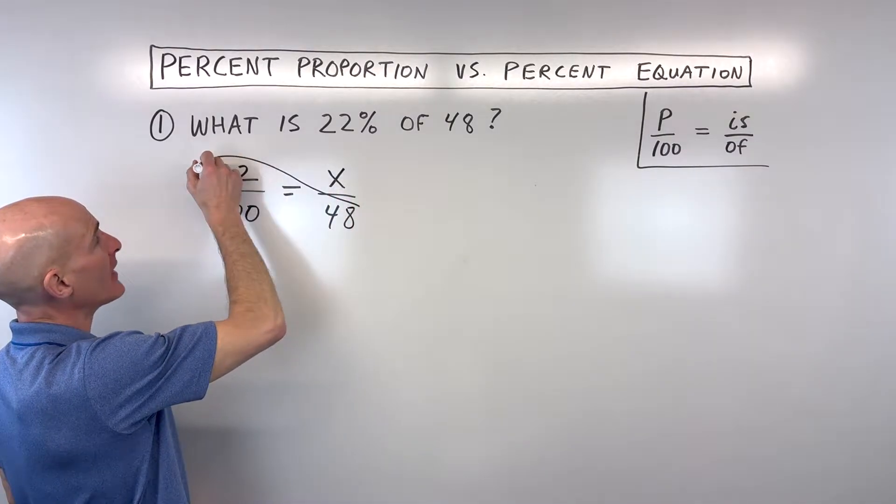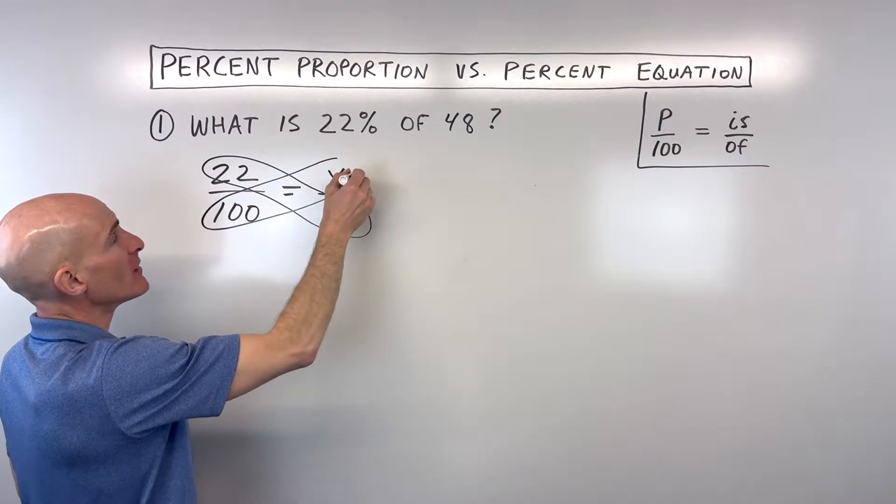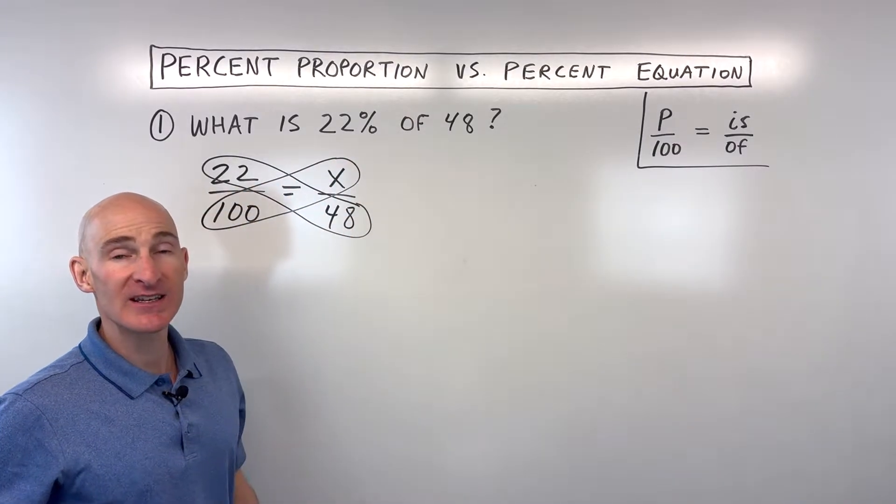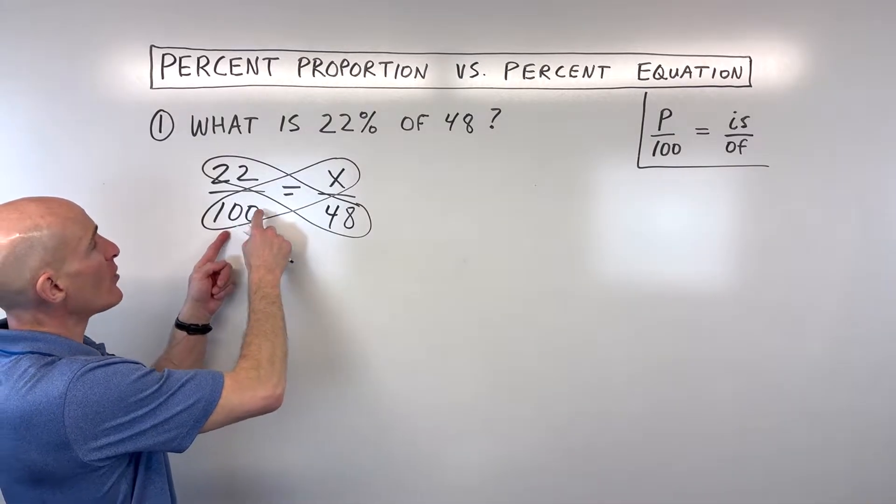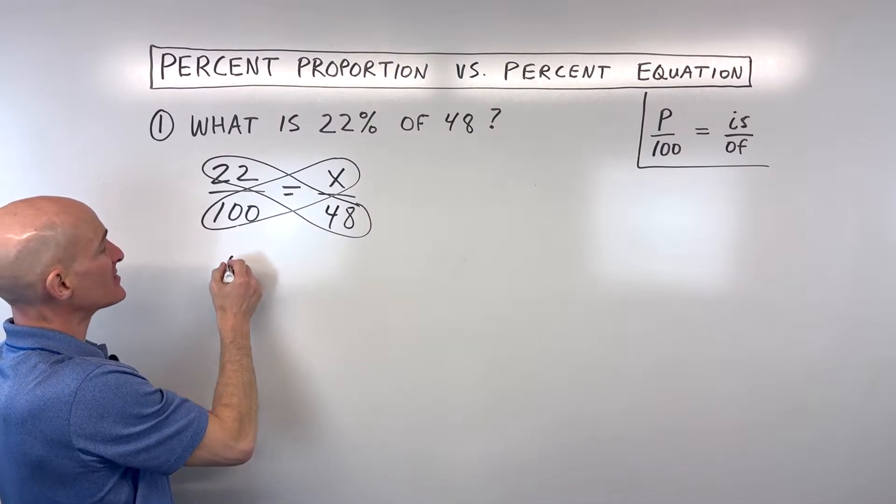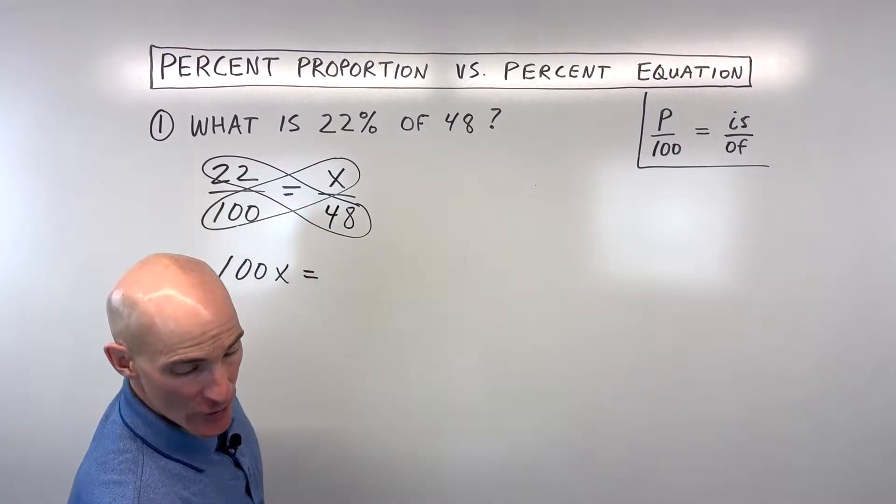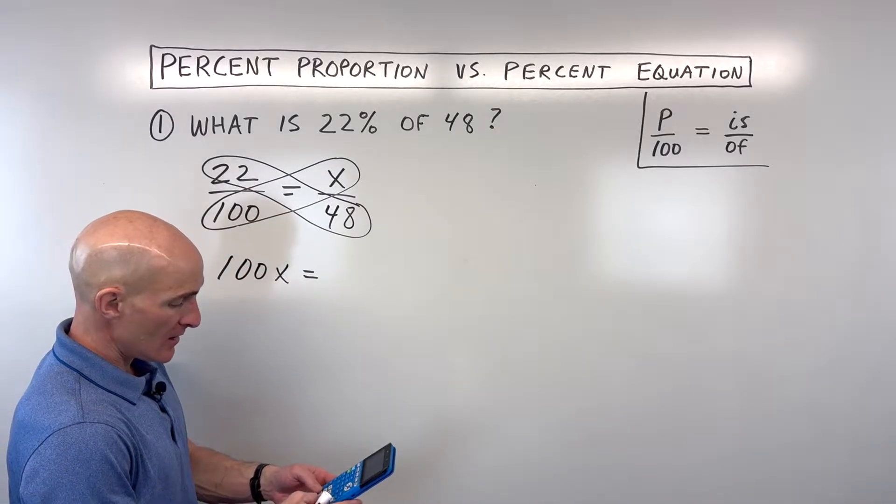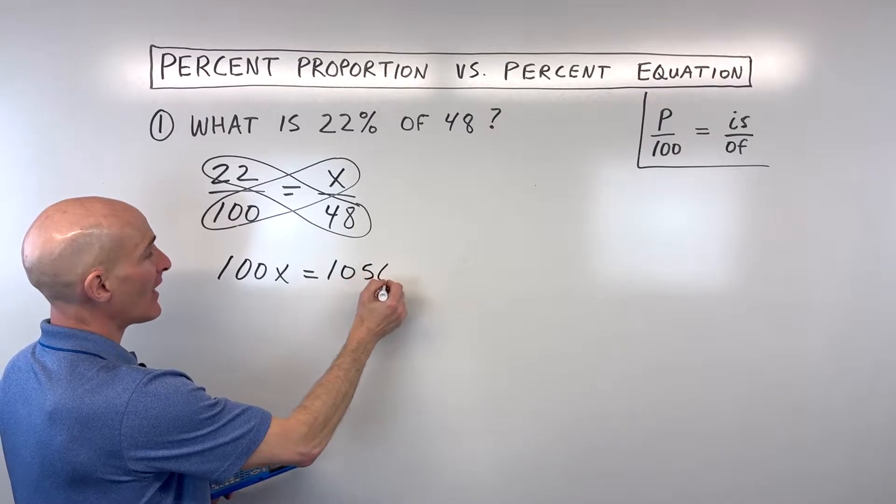Some teachers call this the butterfly technique, some call it cross multiplying, some call it the means extremes property. But what we do is multiply in the diagonal. So 100 times x is 100x equals 22 times 48. I'm going to go to the calculator on this one just to save us a little time, that comes out to 1056.